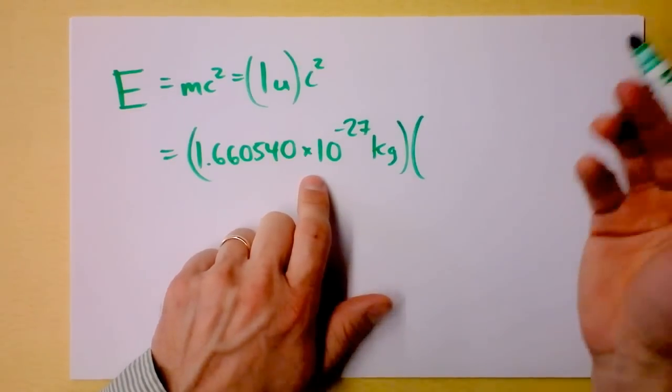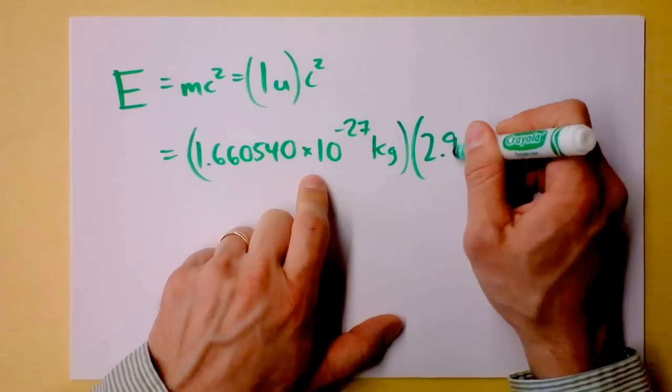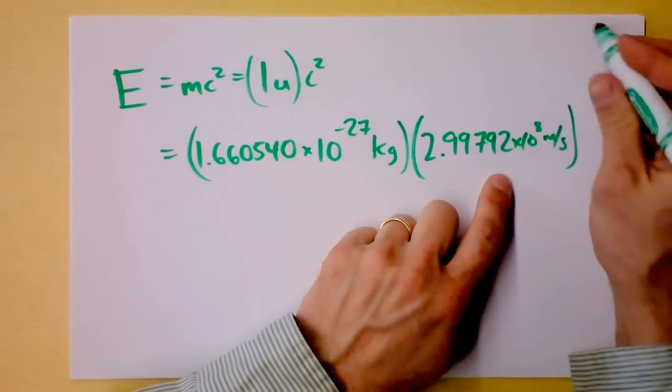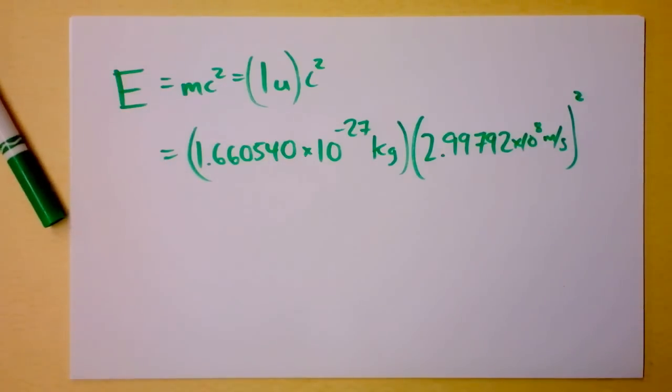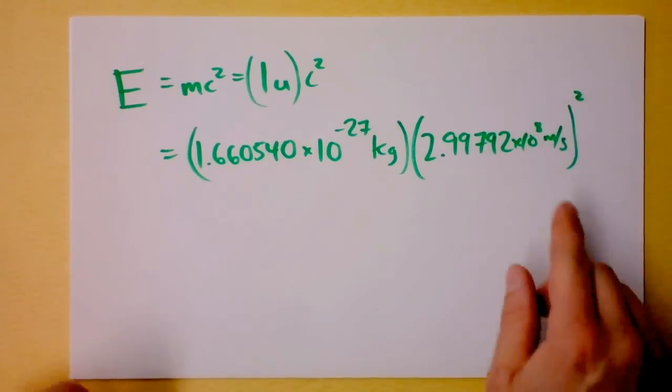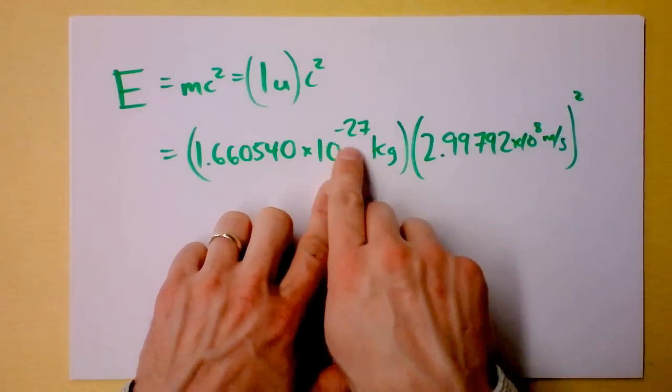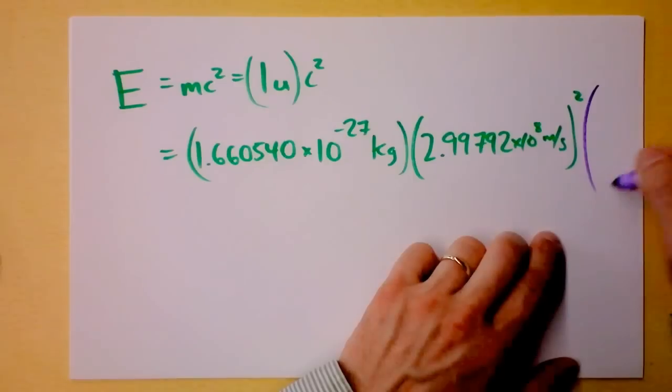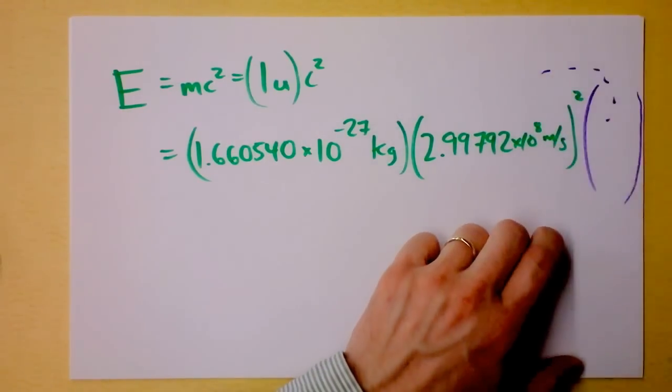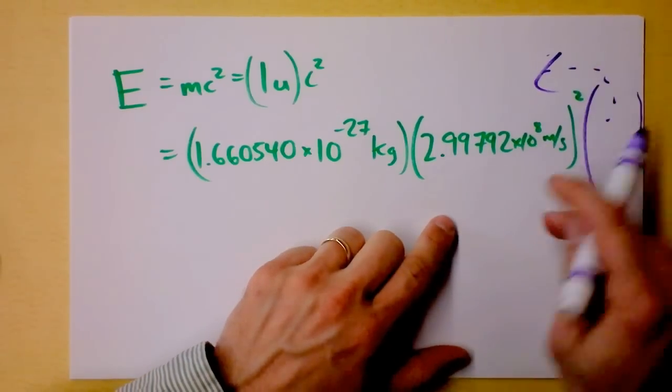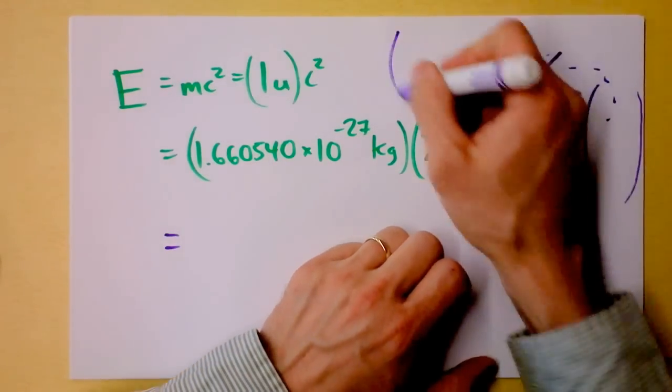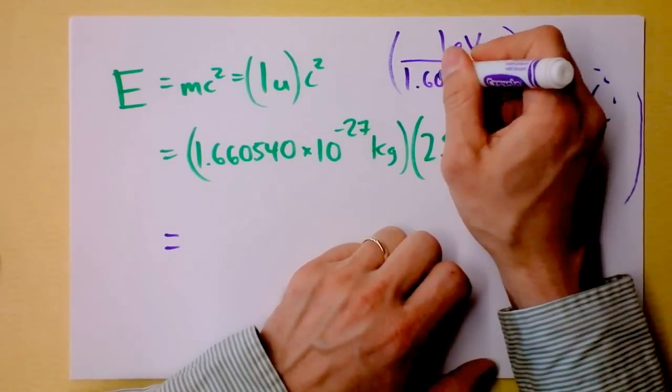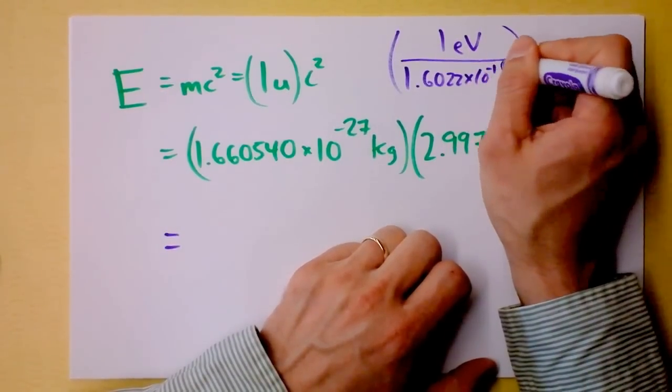So there is 1U in kilograms. And then I've got to go full glory: 2.99792 times 10 to the 8th meters per second. This would give me an answer in joules, but I'm not interested in an answer in joules because it will be still a very small number. This is 10 to the 16th, so it'll be like 10 to the negative 11th joules. That's not a handy number. Let's go into electron volts. If we multiply by the number of electron volts that are present in joules, then we will get an answer in electron volts. So I have to multiply by 1 electron volt and divide by 1.6022 times 10 to the negative 19th joules.